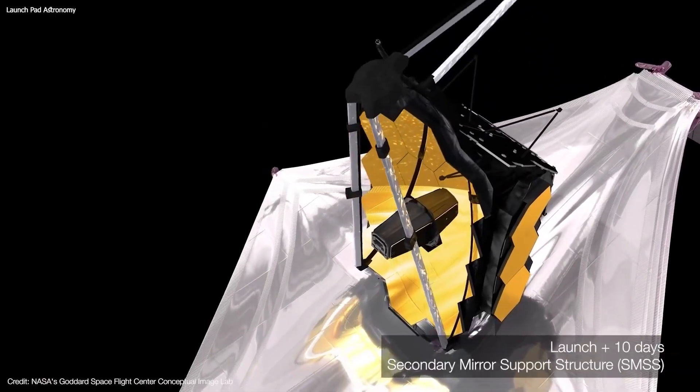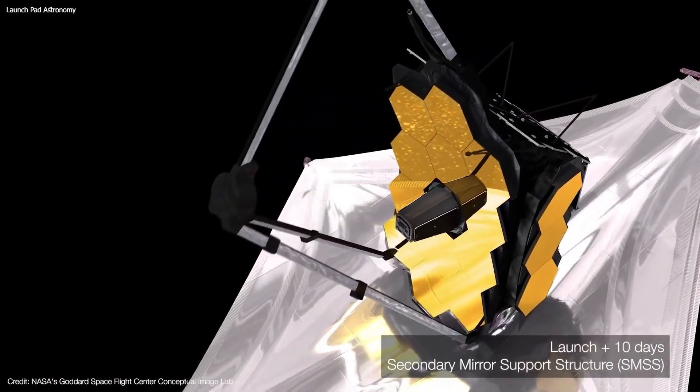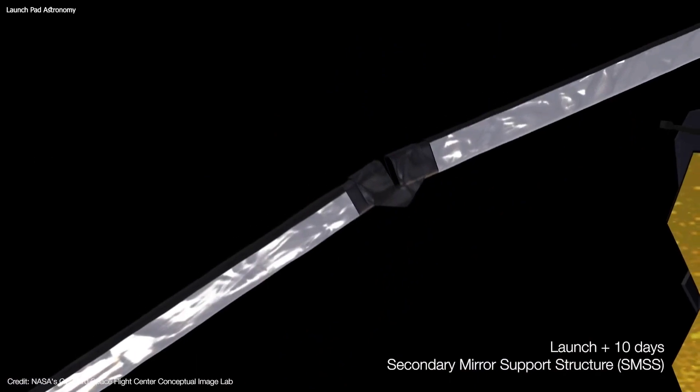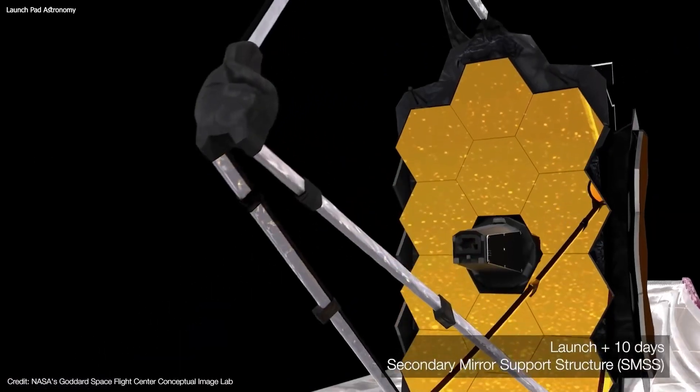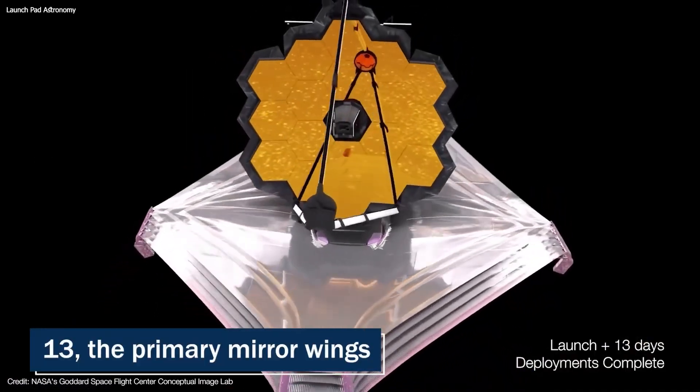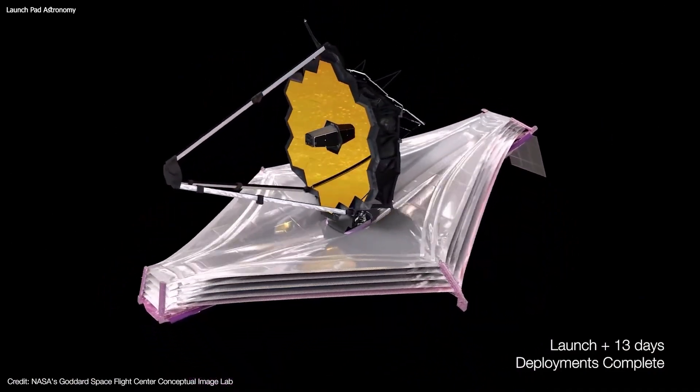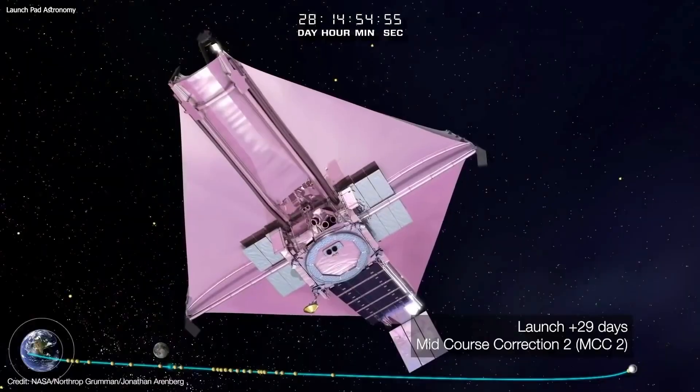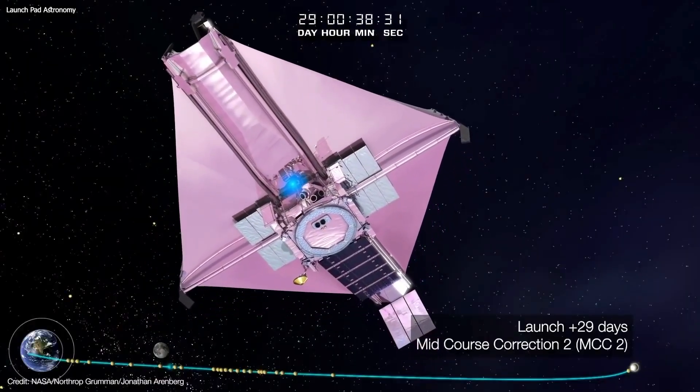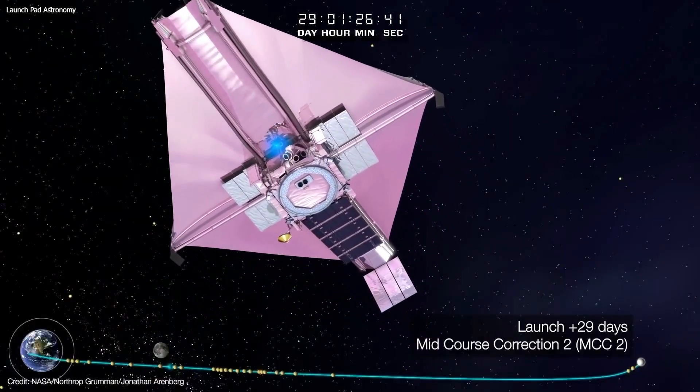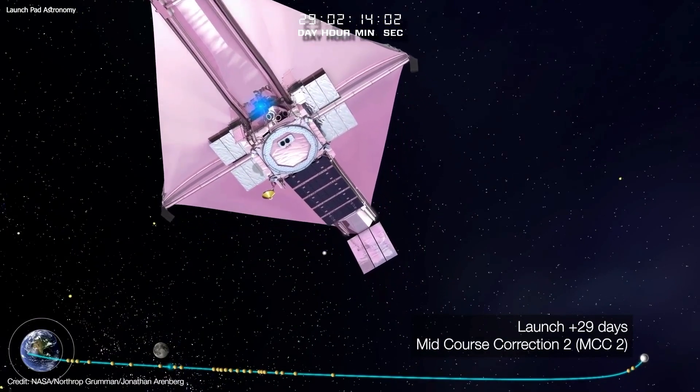On day 10, the secondary mirror was deployed, along with a support structure to hold the smaller mirror in place. Then, on day 13, the primary mirror wings were extended, giving the telescope its full size and shape. Once these steps had been completed, the telescope was ready to begin its mission of observing distant stars and planets.